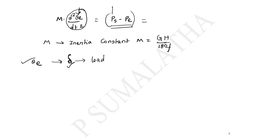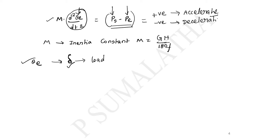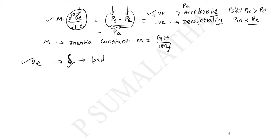In the equation, shaft power is positive and electrical power is negative. If the result is positive, the rotor accelerates; if negative, the rotor decelerates. This means: if mechanical input is greater than electrical output, the rotor accelerates; if mechanical power is less than electrical power, the rotor decelerates. The difference between mechanical input and electrical output is called the accelerating power PA.